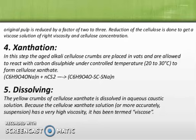This honey-like, deep brown solution is transferred to the next operation — dissolving. In dissolving, the soda cellulose xanthate is dissolved in a highly aqueous caustic soda solution of about 6 to 6.5% concentration, and a viscous solution is prepared.